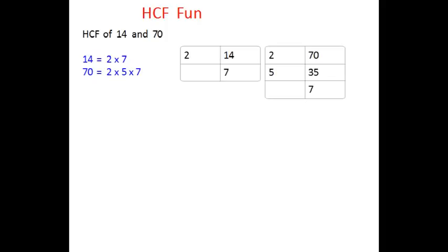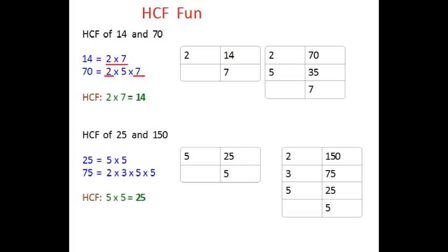So the common factors are 2 and 7. We multiply that and the product is 14, so our HCF is 14. Let's take one more example, 25 and 150.